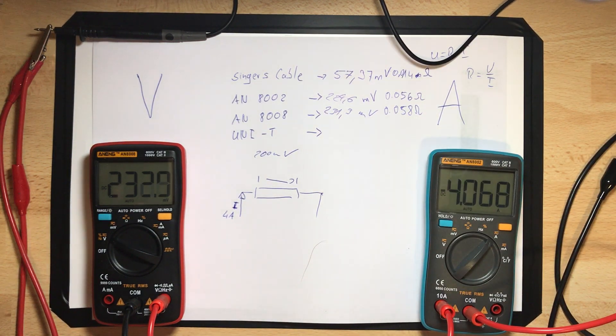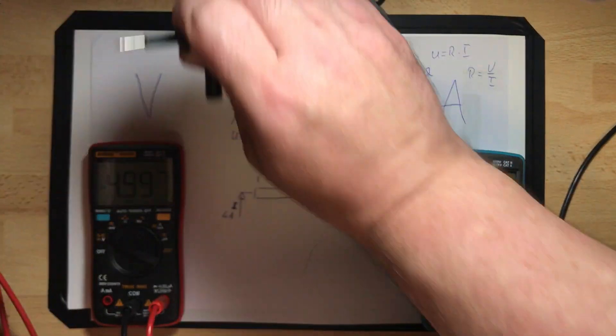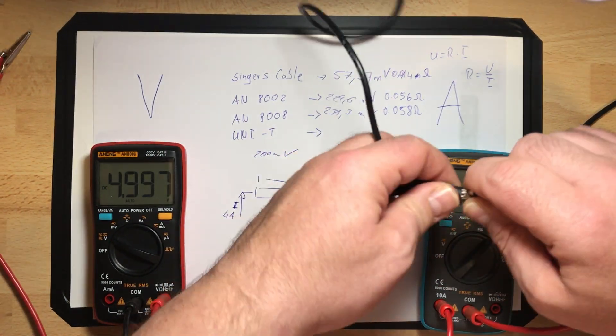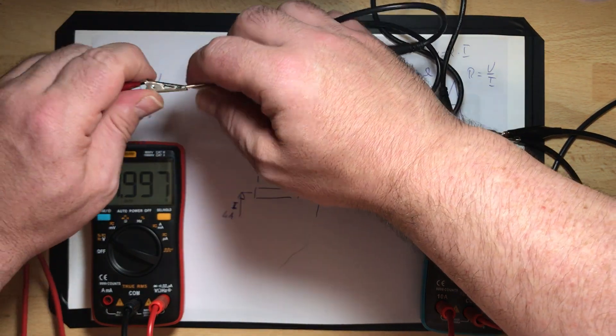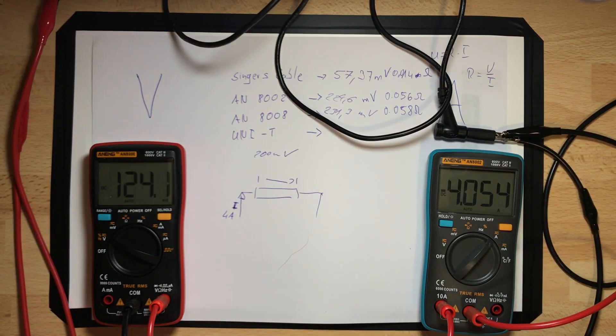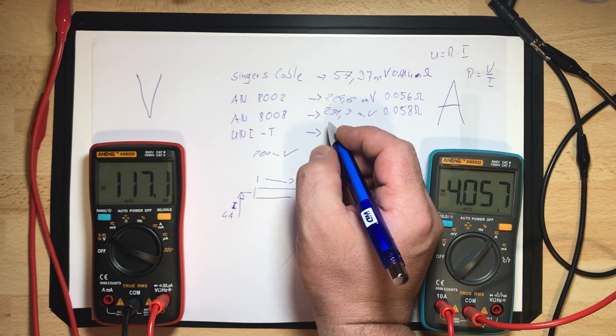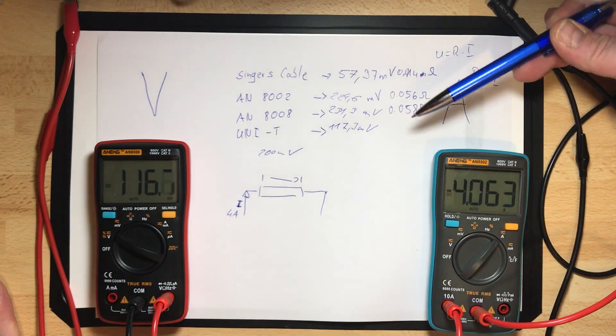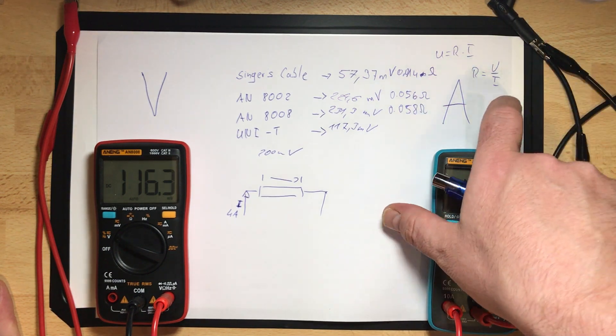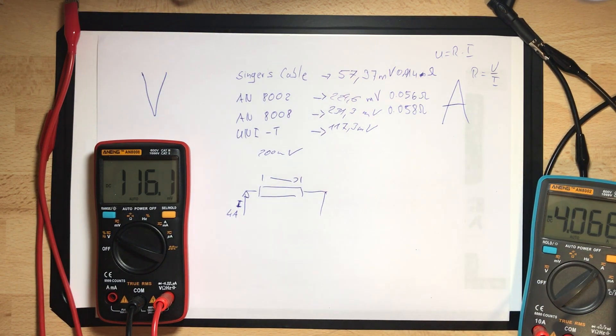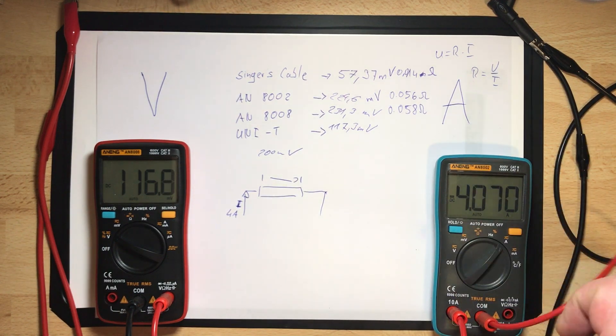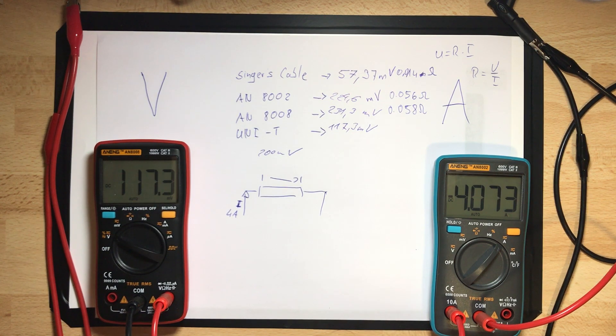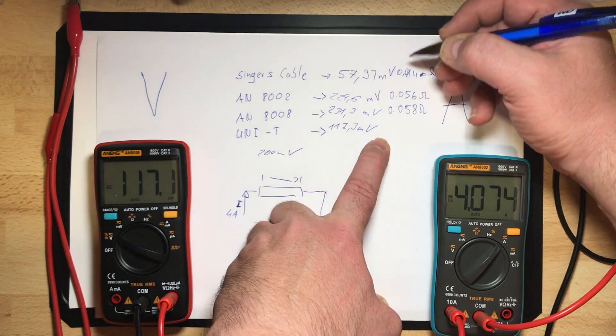Now we're coming to the cable delivered with the AN8008. Let me get this in there, pressing it tight. I'm getting 231.3 millivolts. At least I'm testing the probe cable from the best multimeter I have, the UNI-T. Let's see if there's a difference. We have 117-119 millivolts.